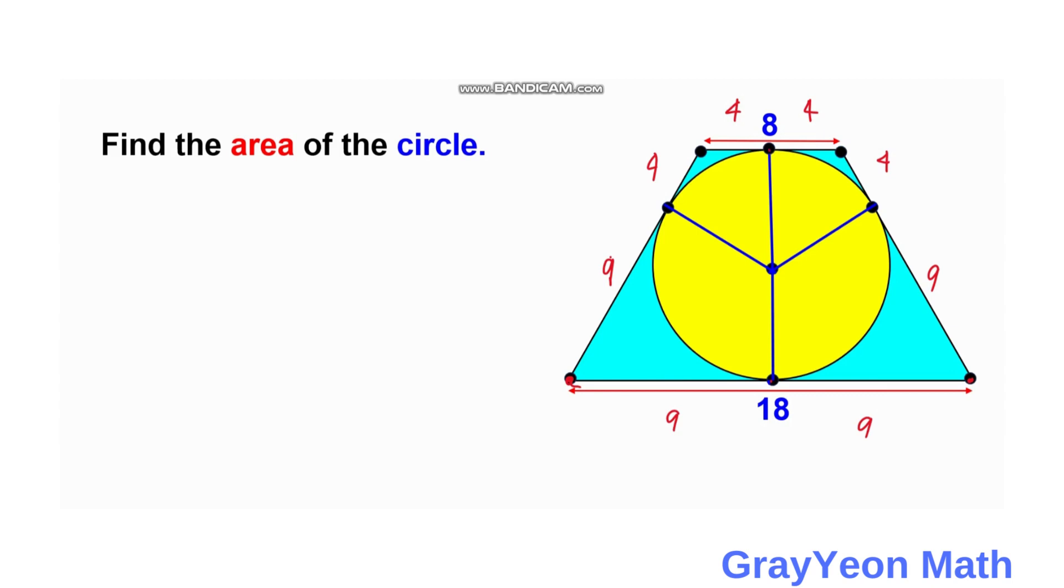Next is we project this diameter of this circle to the left or to the right. If we project that, then we draw a line from this point towards this bottom segment of this trapezoid, and we actually form a right triangle. And the hypotenuse is actually this becomes 9 plus 4 becomes 13.